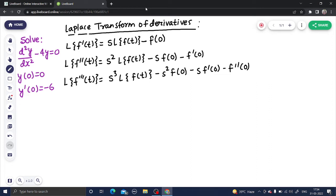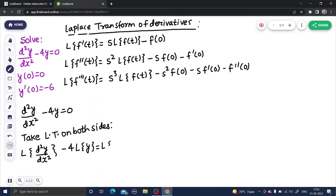Now, if you are asked to solve this using Laplace transform, first write this equation once again. We have d²y/dx² - 4y = 0. Take Laplace transform on both sides.